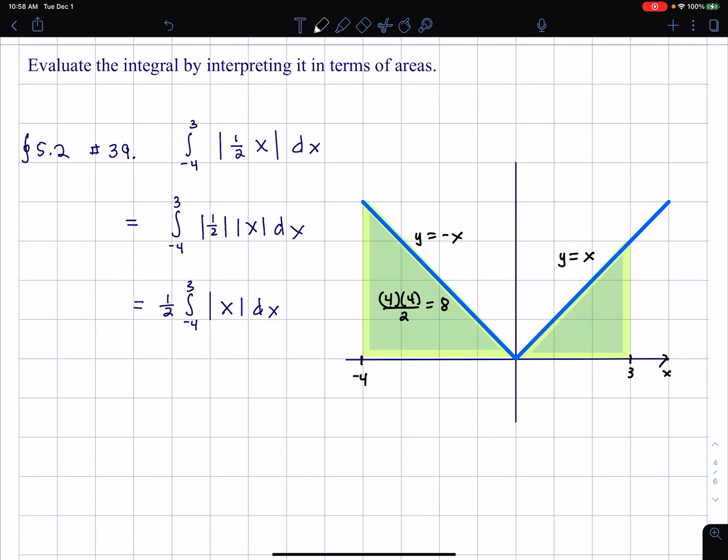And then for this one over here, I'll have three times three divided by two, which is nine halves. So that I have, as my answer, one half times this area, which is eight plus nine halves.